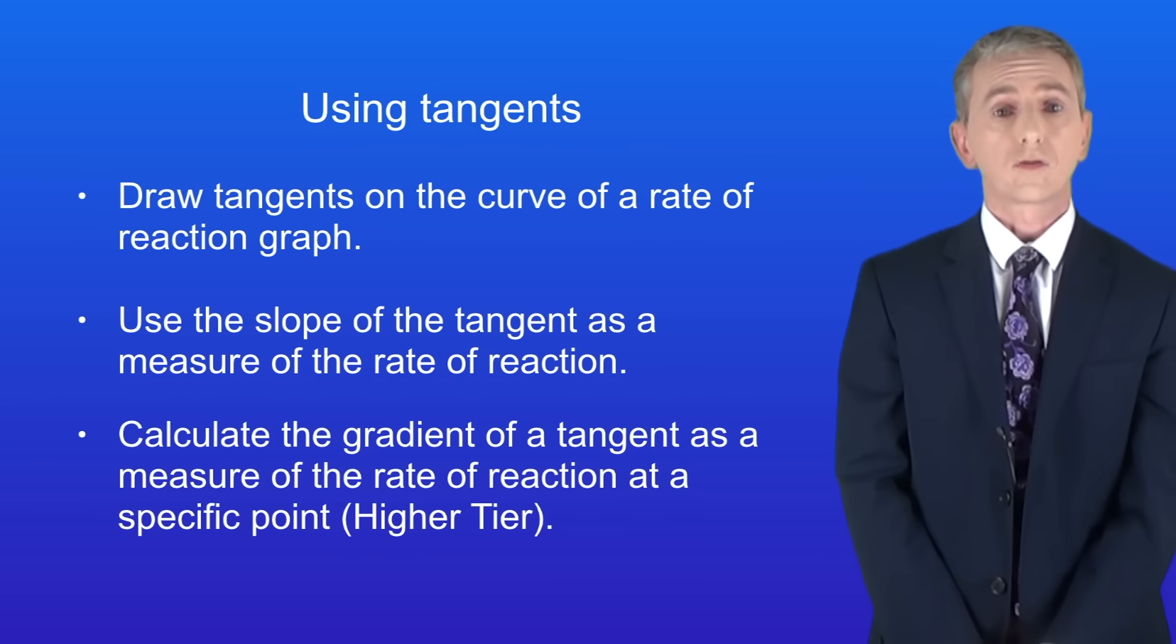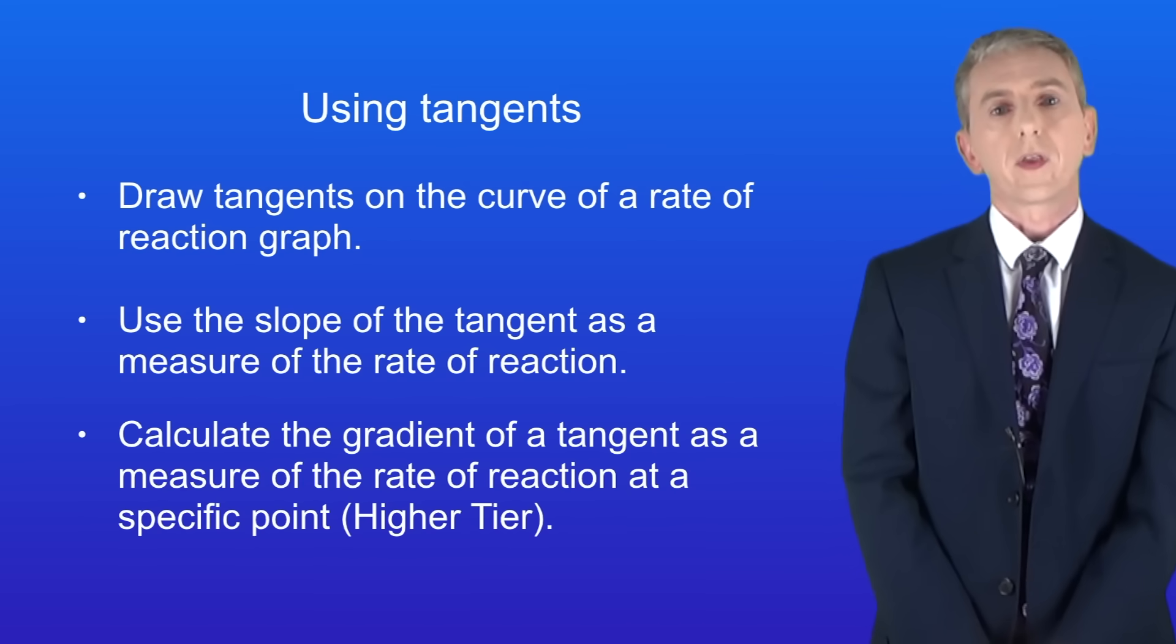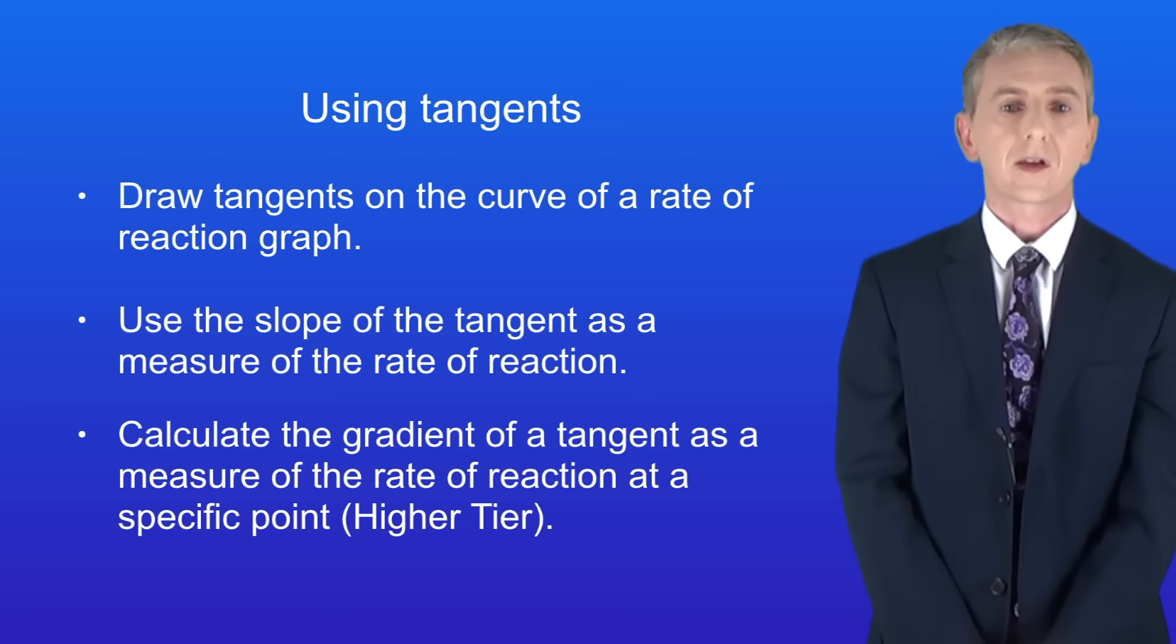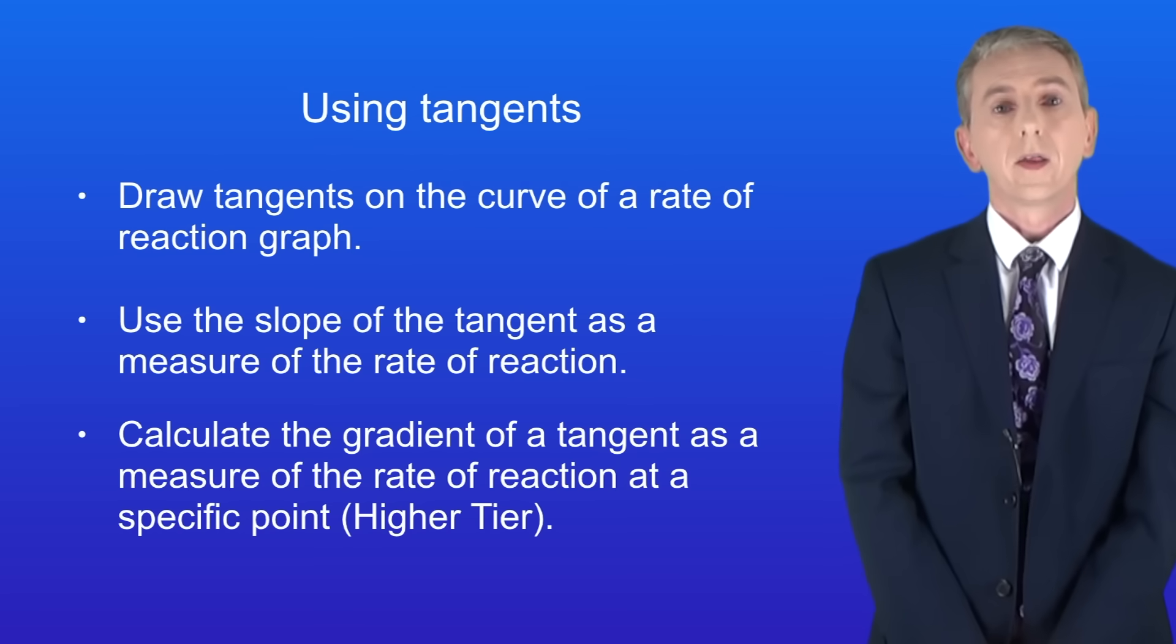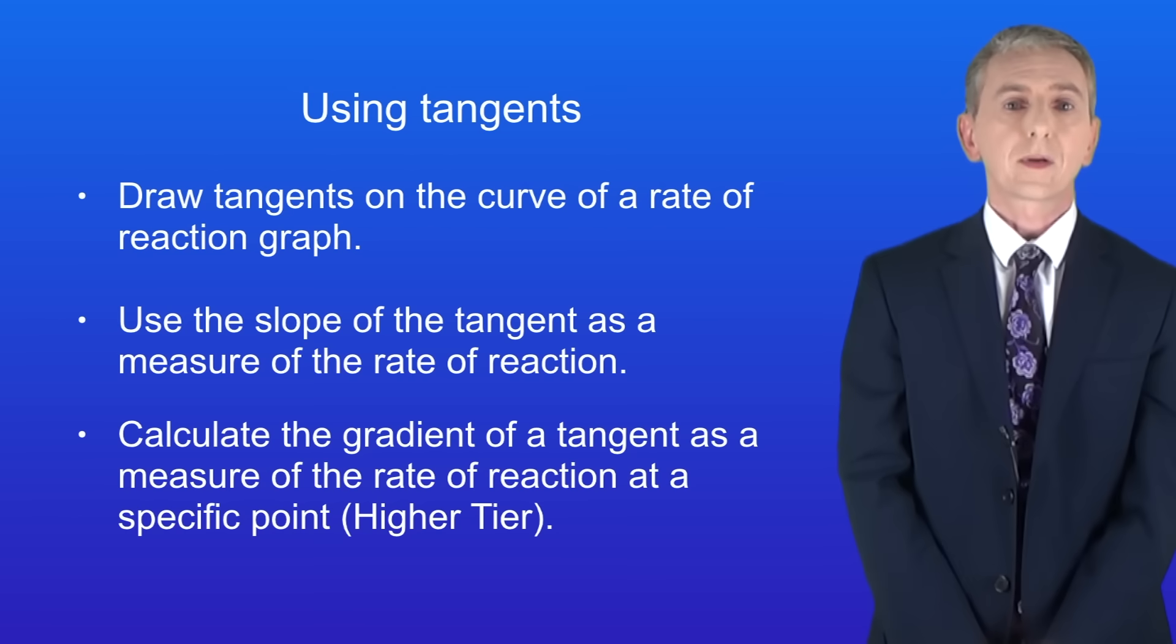So hopefully now you should be able to draw tangents on the curve of a rate of reaction graph. You should then be able to use the slope of the tangent as a measure of the rate of reaction. And if you're a higher tier student you should be able to calculate the gradient of a tangent as a measure of the rate of reaction at a specific point.